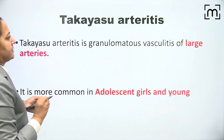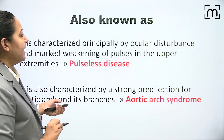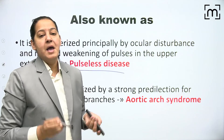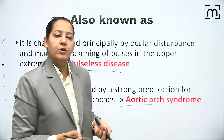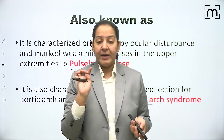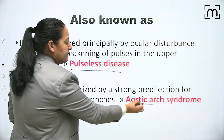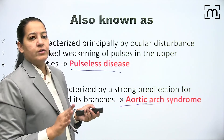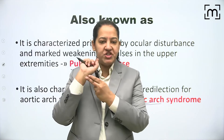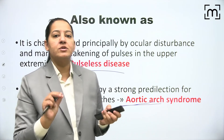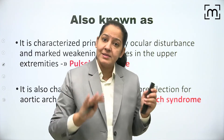The second large vessel vasculitis is Takayasu arteritis, also known as pulseless disease. It usually occurs in adolescent girls and young women. The branches of the aortic arch are involved - subclavian, brachiocephalic, and carotid arteries. Since the brachiocephalic and subclavian arteries supply the upper limbs, inflammation causes thickening and the pulse cannot be palpated - hence pulseless disease.